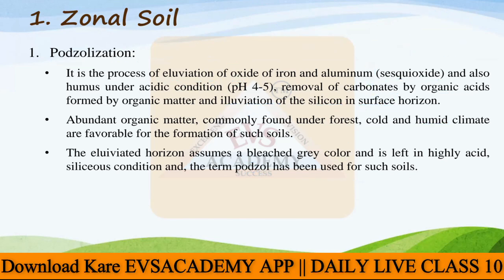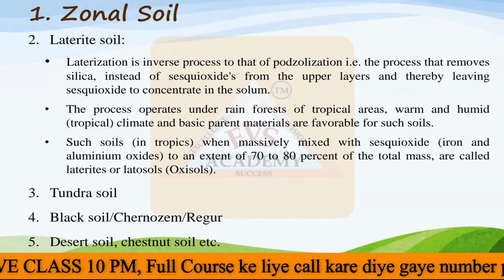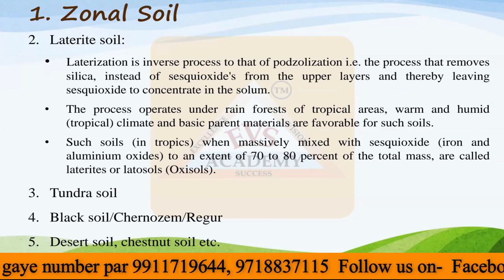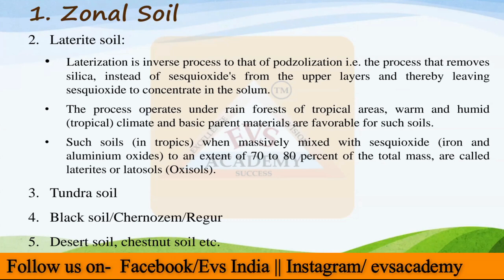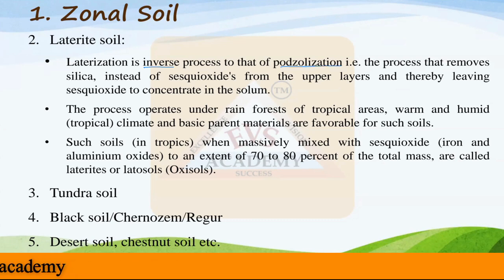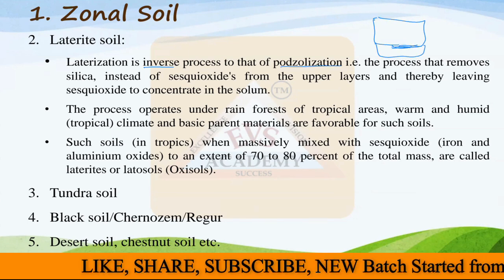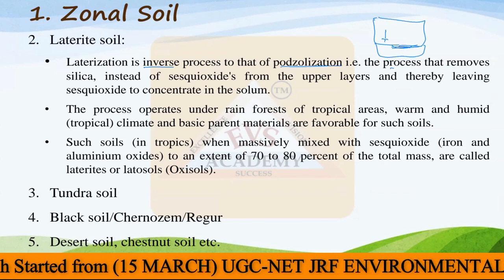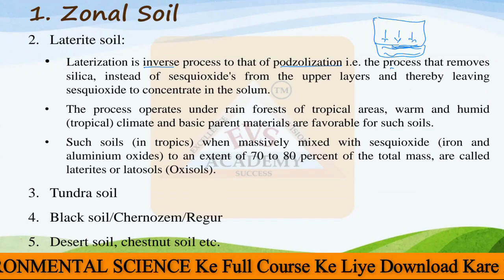The second type of zonal soil is laterite soil, created through laterization — the exact opposite of podzolization. In laterization, silica leaches down to the subsurface instead of sesquioxides. So silica moves to the lower layer, and what remains in the upper layer is sesquioxides — the iron and aluminium oxides.